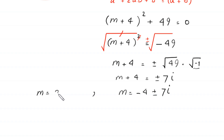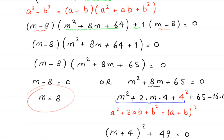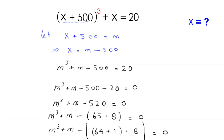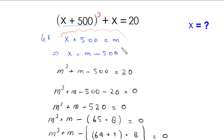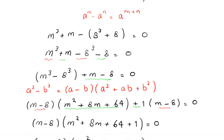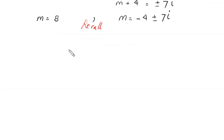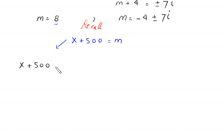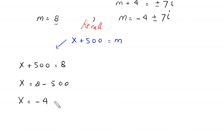We found m = 8 from the first factor. Recalling that x + 500 = m, when m = 8 we get x + 500 = 8. Moving 500 to the right-hand side: x = 8 - 500 = -492. This is the first value of x.